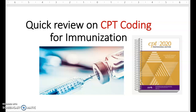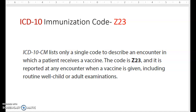Hello coders. This is a quick review on how to code for immunization from your CPT manual. There's also a code from your ICD-10, which is just one code usually, whenever a vaccine is given. You will always use Z23 from your ICD-10 manual, so not much to discuss there.